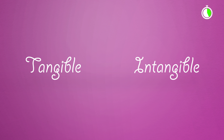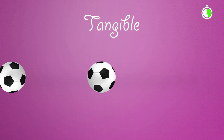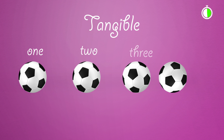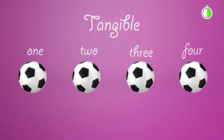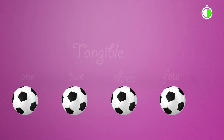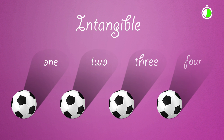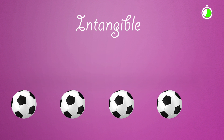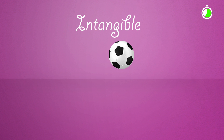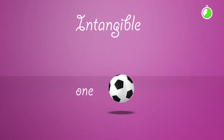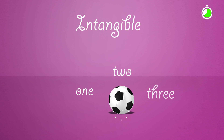For example, we can count physical objects such as soccer balls, but we can also count things that we can't touch, such as the shadows of the balls, the number of times the ball bounces, or the sound it makes each time it hits the ground.